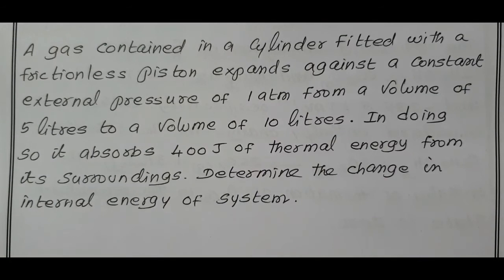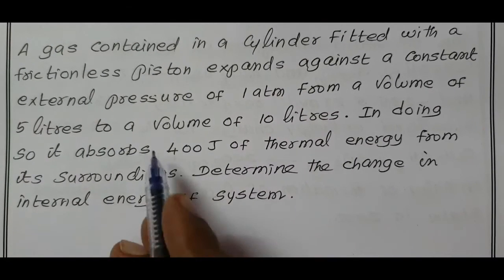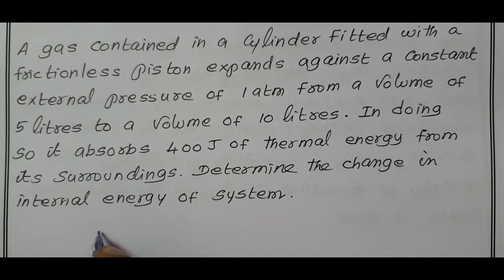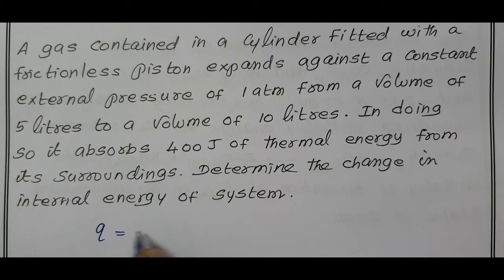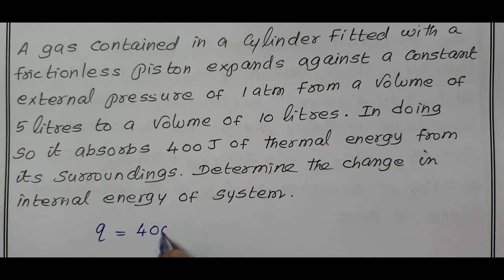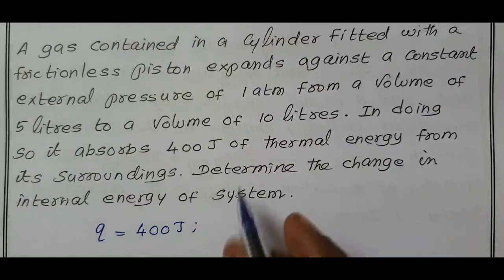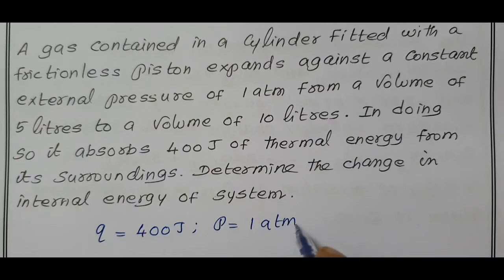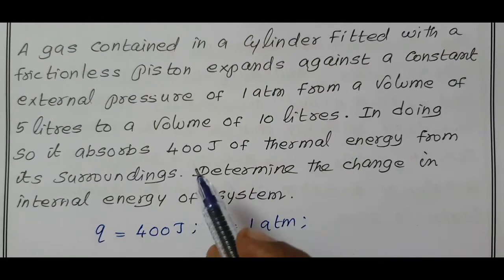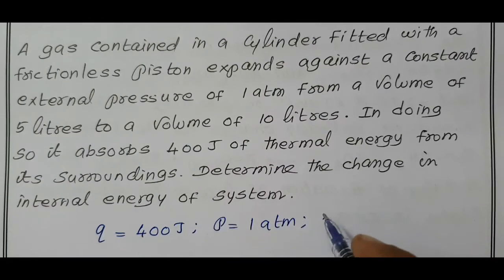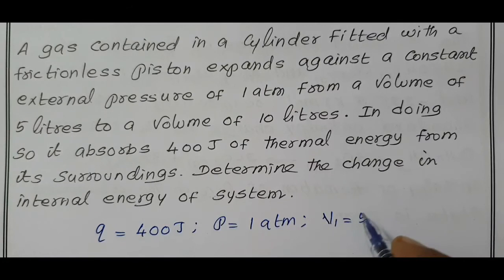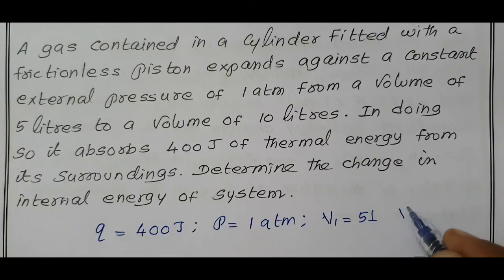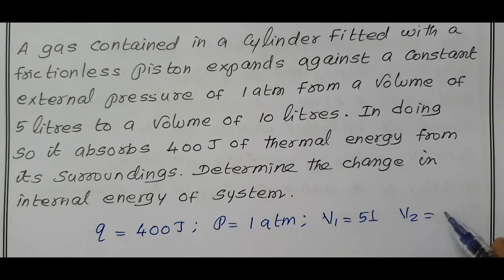First, I write what are the values given. The quantity of heat Q value is given as 400 joules. Pressure value given is 1 atmospheric pressure. Initial volume V1 is 5 liters, and the final volume V2 equals 10 liters.